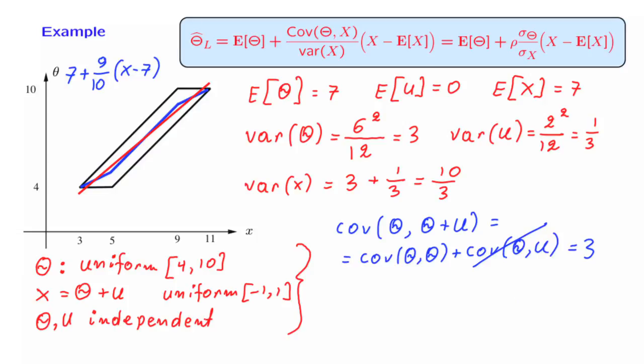The calculations that we went through in this particular example are pretty generic. This is what you need to do in general. You just look at the random variables involved. You calculate their means. You calculate their variances. Then you may have to do some extra work to calculate the covariance of interest. And once you're done, you plug in the numerical values that you have found, and you obtain the form of the linear estimator.